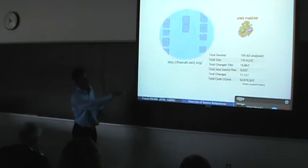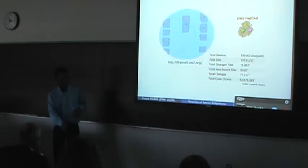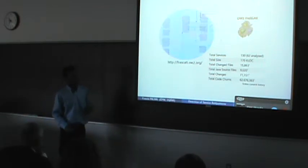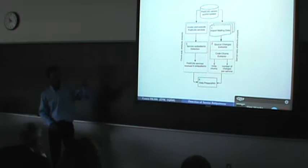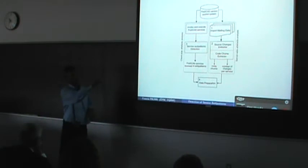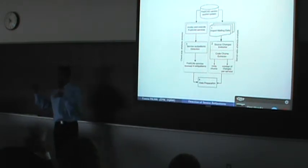We mined all the commit history from Frascati and found more than 70,000 number of changes as well as more than 62 million lines of code across all the commit history, from the beginning of Frascati development. This summarizes our approach and the steps we followed for this study. First we import the meeting data, then once we have the imported data, we have a list of commits and from each commit we get the changes.